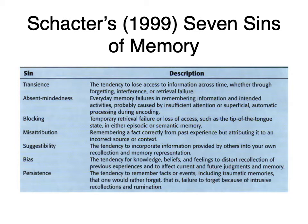The first of these he lists as transience — the tendency to lose access to information across time, whether through forgetting, interference, or retrieval failure. In other words, our memories just don't last forever. If we don't do anything with them, or retrieve them, or act on them, sometimes that information is transient. That's a sort of retrieval failure or forgetting.